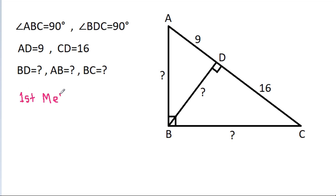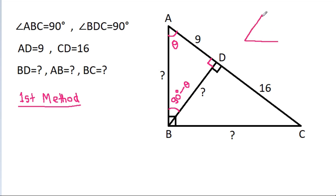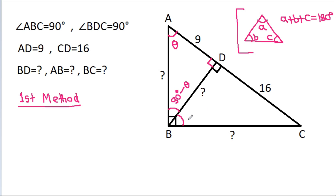First method: suppose this angle is theta and this angle is 90 degrees, so this angle will be 90 degrees minus theta, because in any triangle, if the angles are A, B, and C, then A plus B plus C equals 180 degrees. Again, this angle will be theta and this angle is 90 degrees, so this angle will be 90 degrees minus theta.